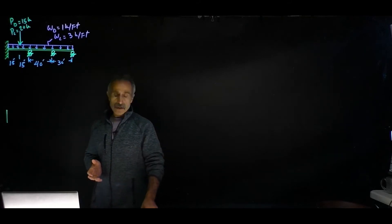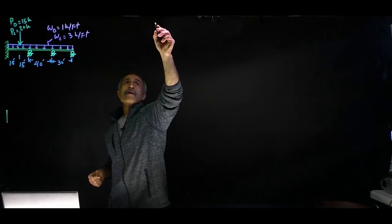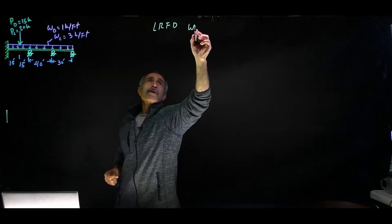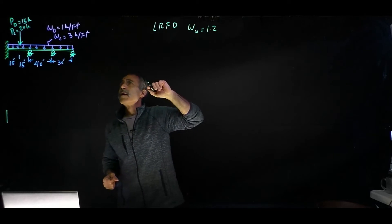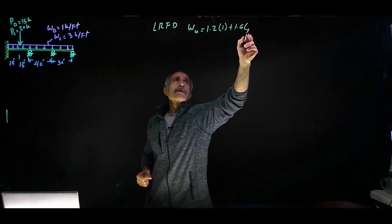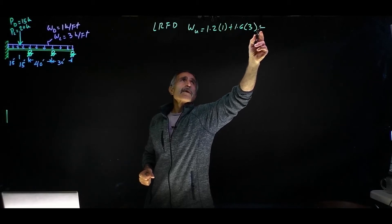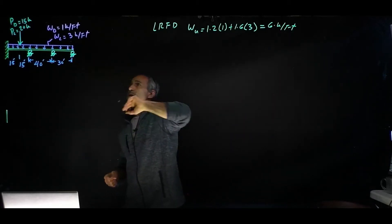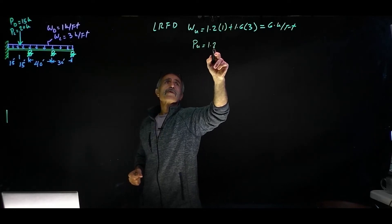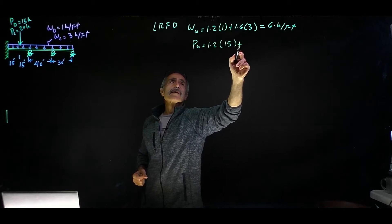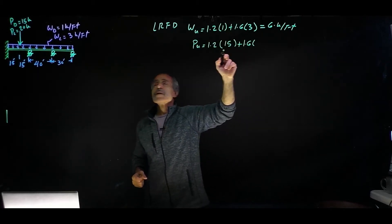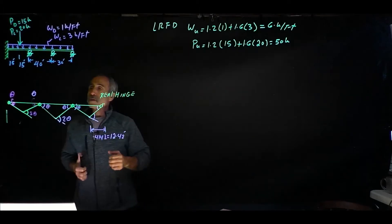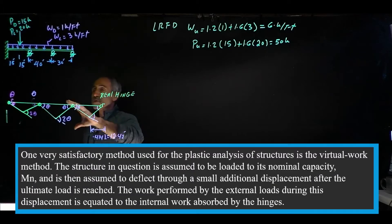First of all, before we do anything, I'm going to go ahead and use LRFD. We calculate the load, so it's going to be WU is equal 1.2 times 1 plus 1.6 times 3 equal 6 kip per foot. And then we have a concentrated load, so PU is going to become 1.2 times 15 plus 1.6 times 20 and comes out to 50 kip.